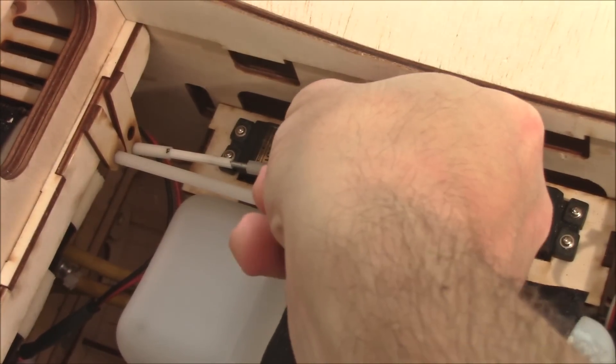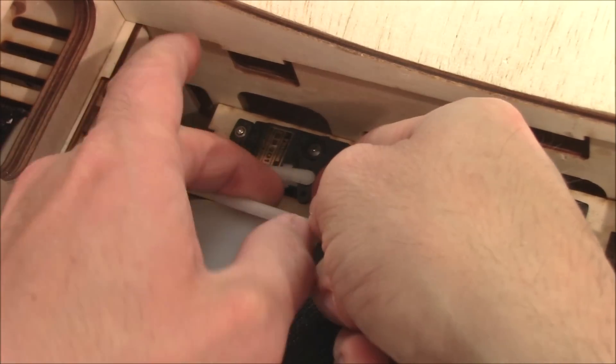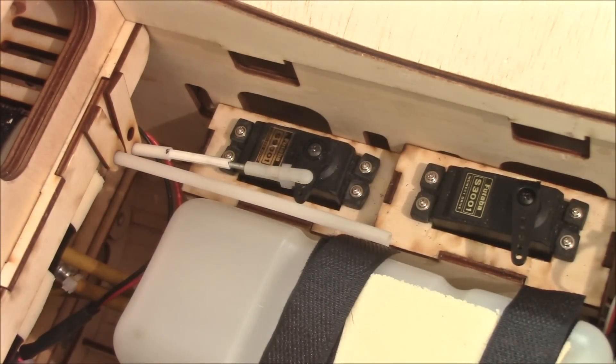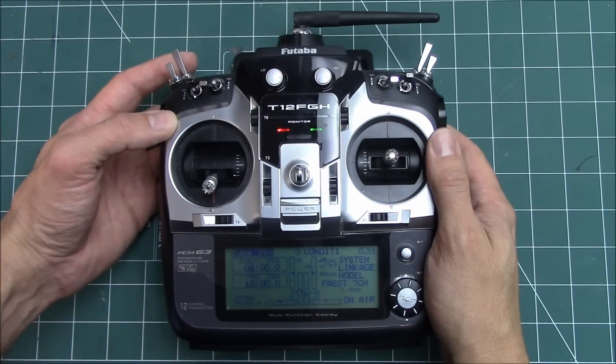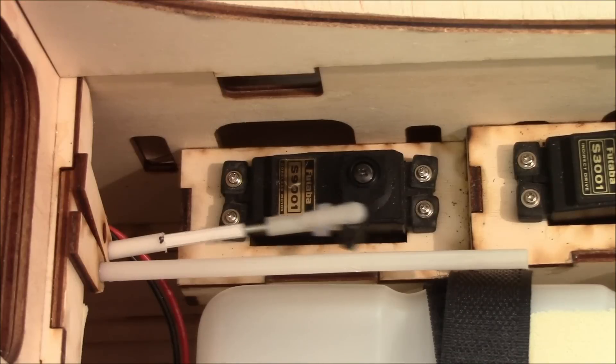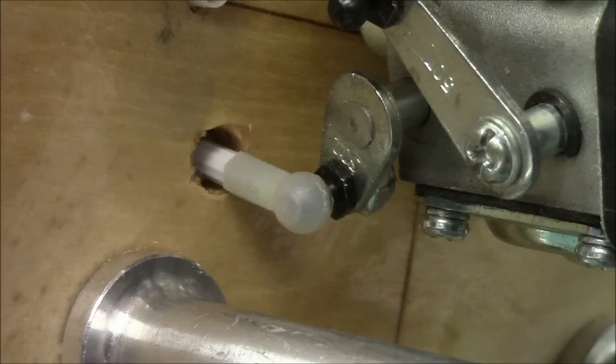A clevis retainer will keep the clevis secured onto the servo arm. Set up the choke servo onto a two-position switch on your transmitter and test it. If the servo binds or does not open and close the choke completely, adjust the length of the push rod or use your radio endpoint adjustments.